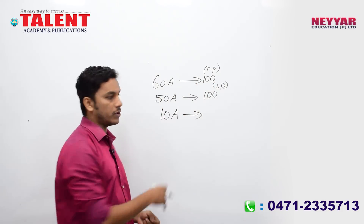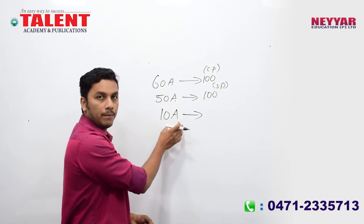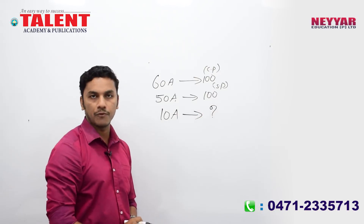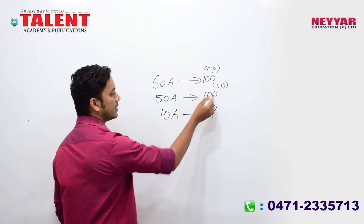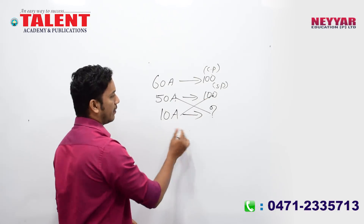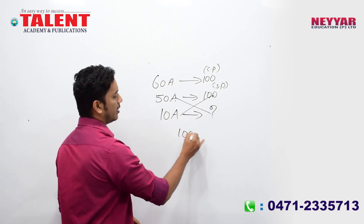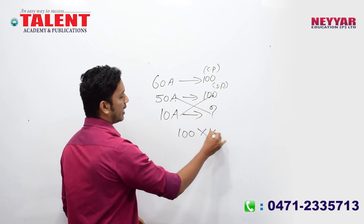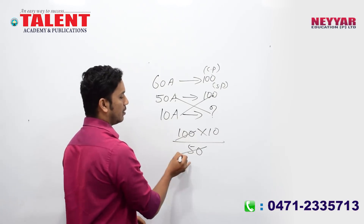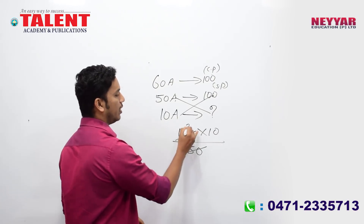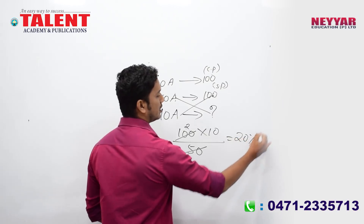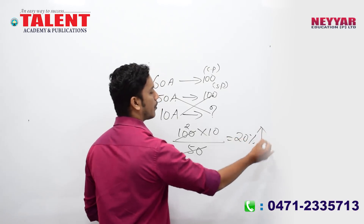You can get 10 articles. Just cross multiplication: 100 times 10 divided by 50 equals 20 percent profit.